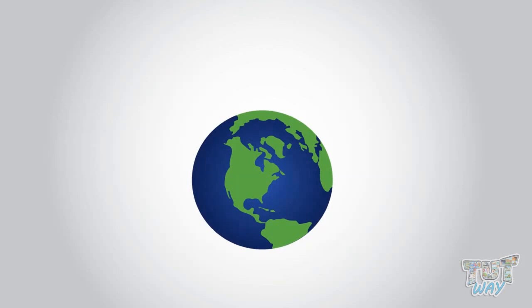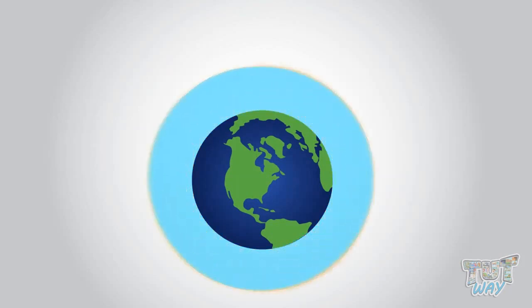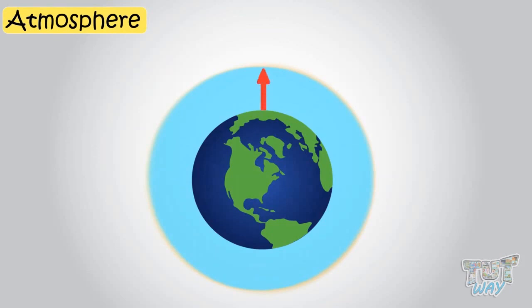Our earth is surrounded by air, which we call our atmosphere. This layer extends up to many kilometers above the surface of the earth.